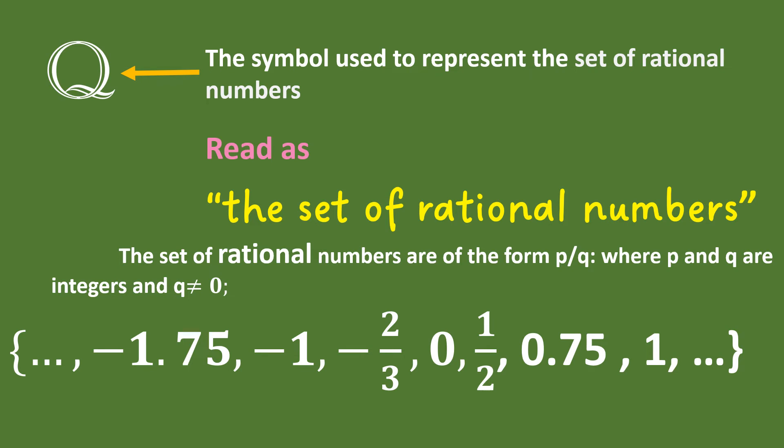negative 1, negative 2 thirds, 0, 1 half, 0.75, and 1. In other words, a rational number could be a fraction, an integer, or a decimal.